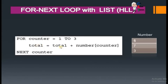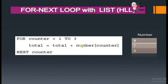The value of total is zero at present. Total plus number[counter], where counter is one, so five plus zero equals five — five will be stored in total. Then the second iteration starts: counter becomes two, total is five, and five plus seven equals twelve, which is stored in total. In the third iteration, counter becomes three and twelve plus three equals fifteen, so fifteen is stored in total. This is how this simple program works.